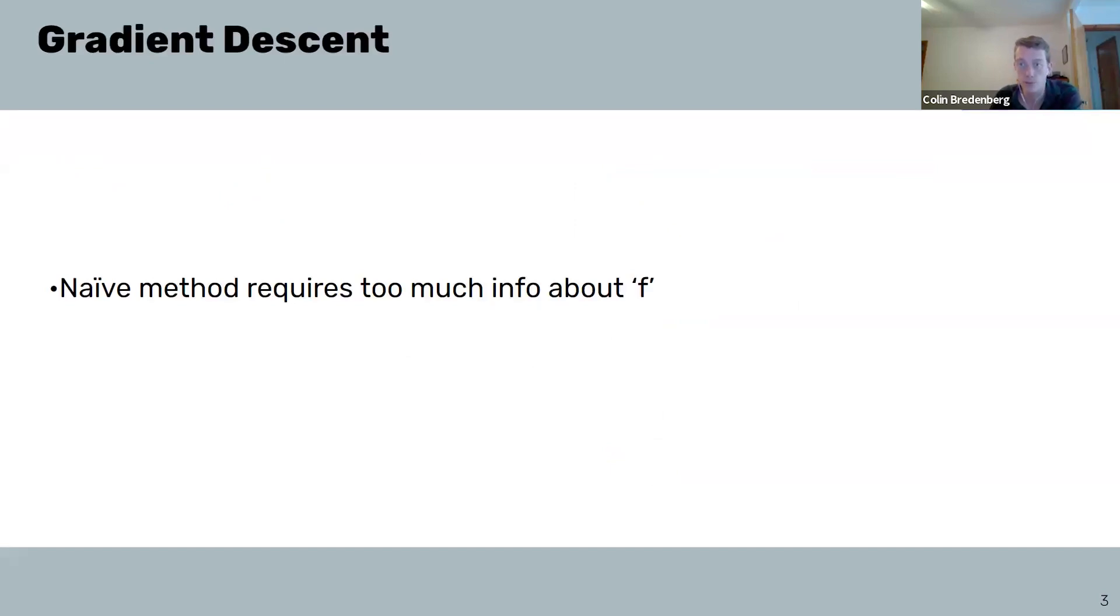The naive approach, and the default for machine learning, would be to do gradient descent. In this situation, the parameter update delta W is given by the gradient of the loss function with respect to W.